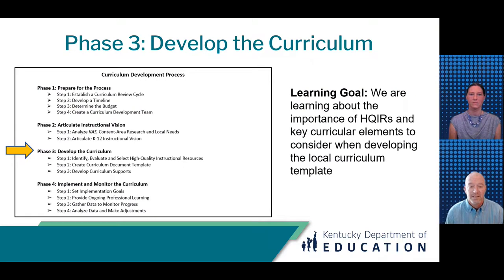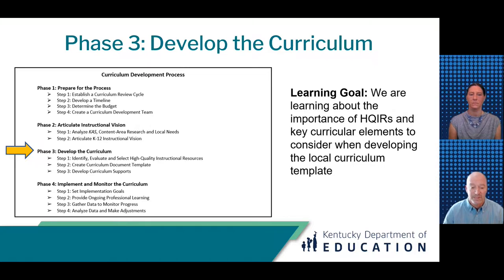Before we move into Phase 3 content, it will be helpful for you to establish a baseline level of understanding. Look briefly at the name Phase 3, Develop the Curriculum, and its three steps. Consider our learning goal: we are learning about the importance of HQIRs and key curricular elements to consider when developing the Local Curriculum Template. This information will be helpful as we activate background knowledge you might have about the third phase of this curriculum process.